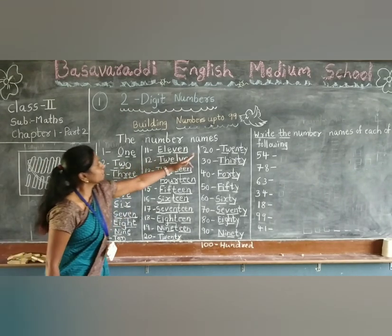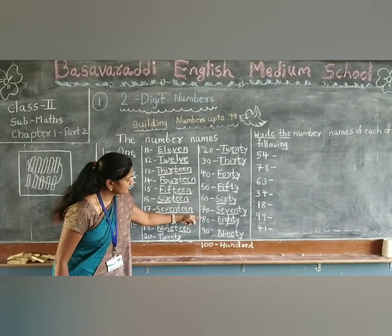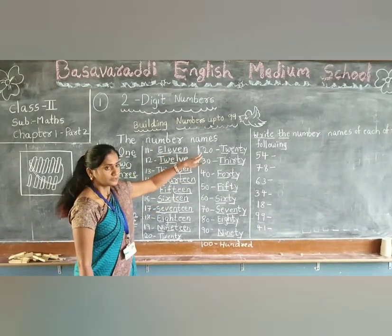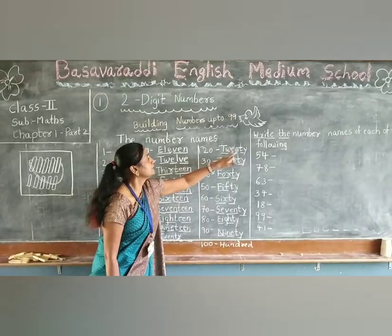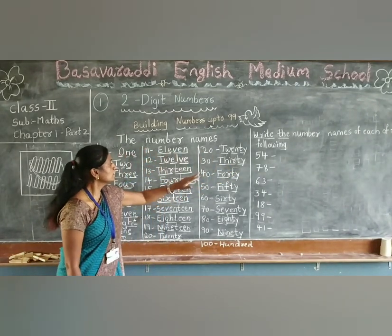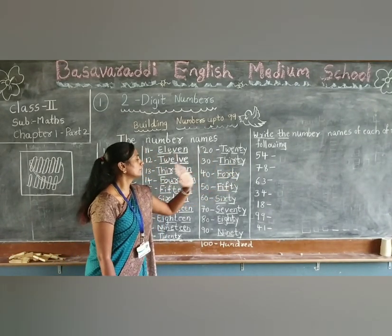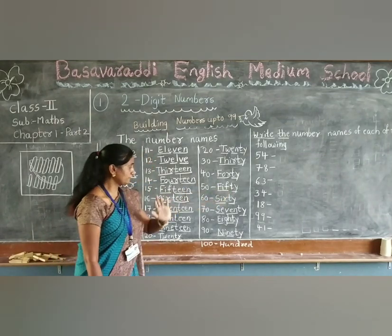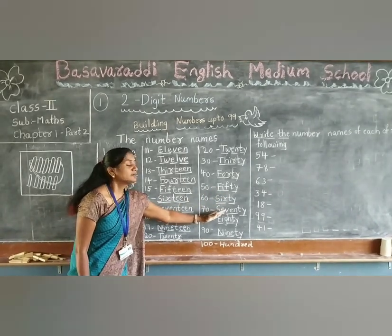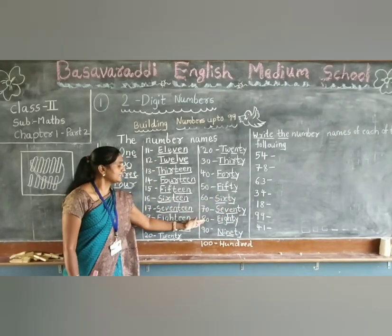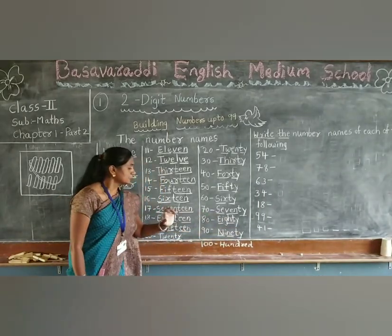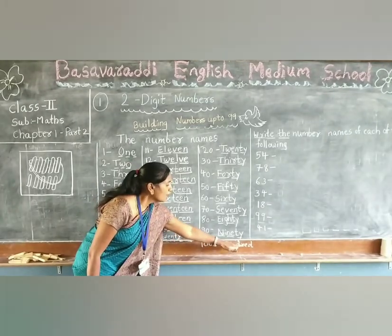Okay, now 20 is there — twenty, thirty, forty, fifty, sixty, seventy, eighty, ninety, one hundred. So this is a tens. We have to make tens names. 20 — T-W-E-N-T-Y. 30 — T-H-I-R-T-Y. 40 — F-O-R-T-Y. 50 — F-I-F-T-Y. 60 — S-I-X-T-Y. 70 — S-E-V-E-N-T-Y. 80 — E-I-G-H-T-Y. 90 — N-I-N-E-T-Y. 100 — H-U-N-D-R-E-D.